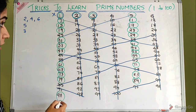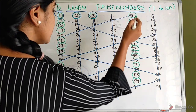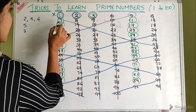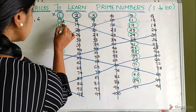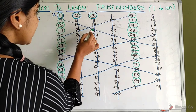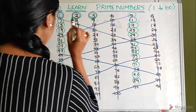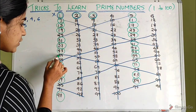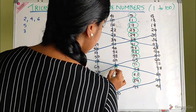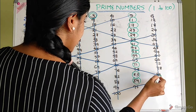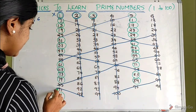Now I write the multiples of 7: 7, 14, 21, 28, 35, 42, 49, 56, 63, 70, 77, 84. Then 84 leads to 91 and 98. That is the number of numbers we have to cross out.